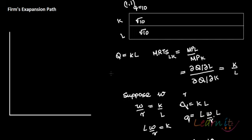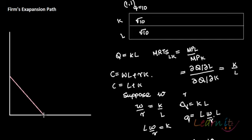To find the isocost line: C = WL + RK. Since W and R are both equal to 1, this simplifies to C = L + K. For the given level of W and R, this is my initial isocost line, and corresponding to this is my isoquant producing Q = 10.